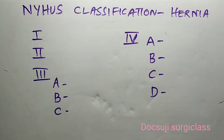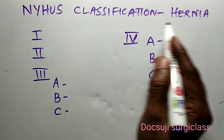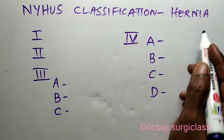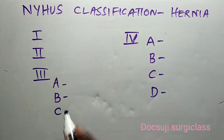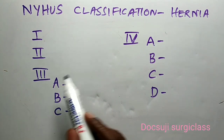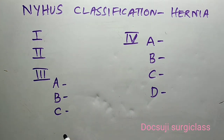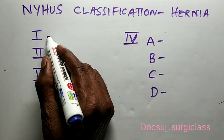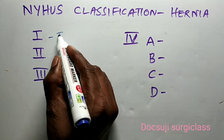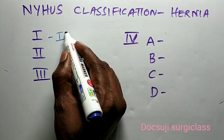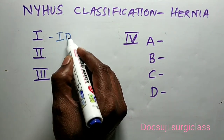In this video I am going to discuss about Nyhus classification of hernia. There are 4 types: Type 1, 2, 3, and 4. Type 1 is an indirect inguinal hernia.